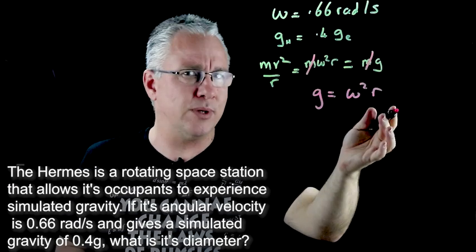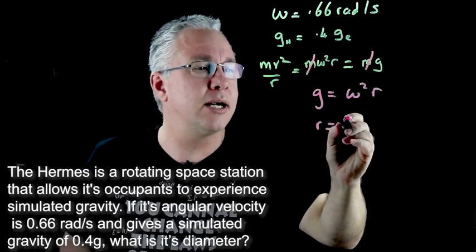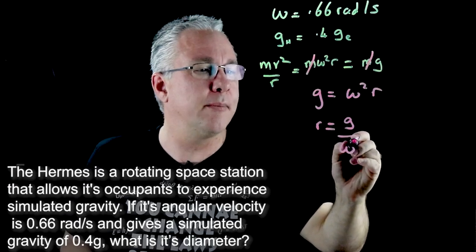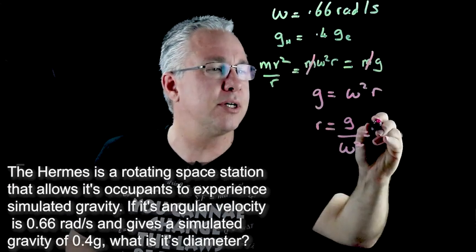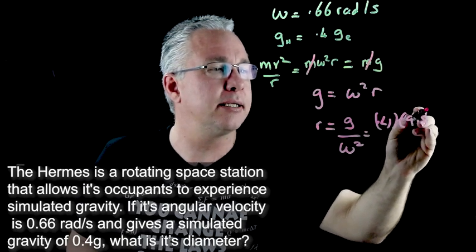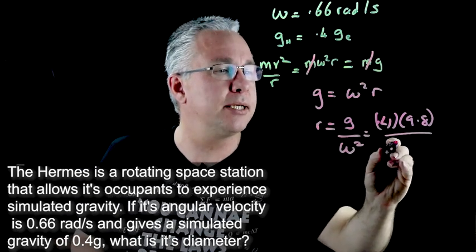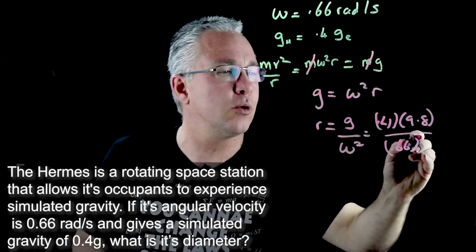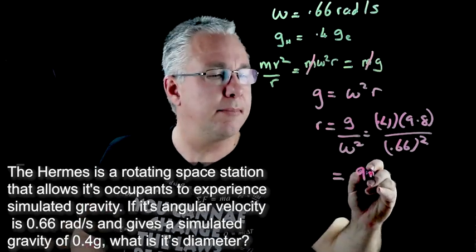Now we've got omega and we've got g and we have to work out r. So all now I need to do is say r is equal to g over omega squared. This g value of course is what we're after so it's actually 0.4 multiplied by 9.8 which is the acceleration due to gravity on earth's surface divided by 0.66 and of course this is all squared and that means I get a value of 9 meters.